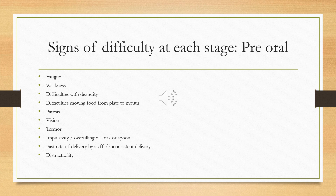A person might also have a tremor. With a tremor, when a person has food on a fork or spoon, it can end up falling off, and similarly with a cup. Some signs of difficulty might also be impulsivity — people might eat very quickly and gather food very quickly from their plate. Other people might overfill the fork or spoon, which can lead to difficulties in the oral stage. Another difficulty can be a fast rate of delivery by staff members when supporting somebody with eating and drinking, leading to difficulty if the person isn't ready to swallow.